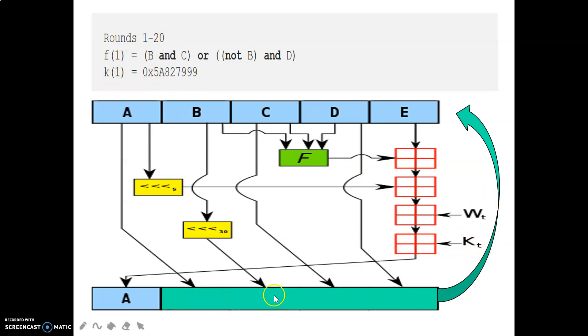So we have seen how to calculate new B, C, D, E, and we need to do all these steps for new A. First of all, we need to calculate the function F, then we need to do these 4 steps. For each step, we have used add operation. Wt means that we have used W0 to W19, because we are talking about round 1 to round 20. And Kt is going to stay the constant value of this K1. So we have now new A calculated.